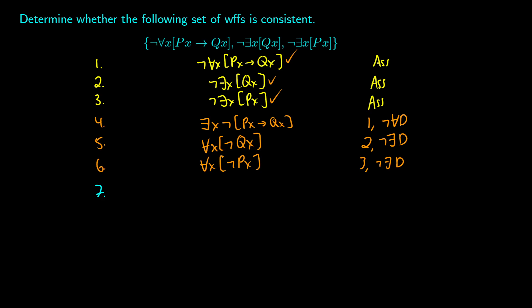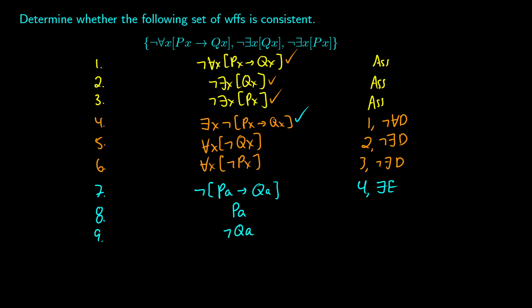Following that strategy, from line 4 we do existential elimination: 'exists x, not(px arrow qx)' becomes 'not(pa arrow qa)' using new constant a. From line 4, existential elimination. Now we break this down: 'not(pa arrow qa)' is false when pa is true and qa is false, so this gives us pa and not qa on line 7 — decomposition on the arrow.